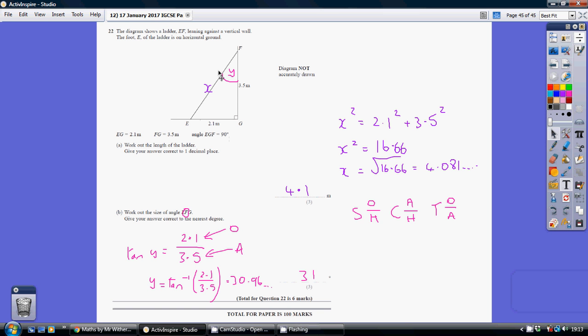So calling the length of the ladder x, x squared equals 2.1 squared plus 3.5 squared. Popping that into a calculator, we get x squared being this. Square root to find x, which is this, which to one decimal place is 4.1.